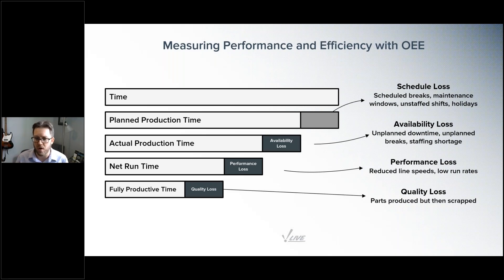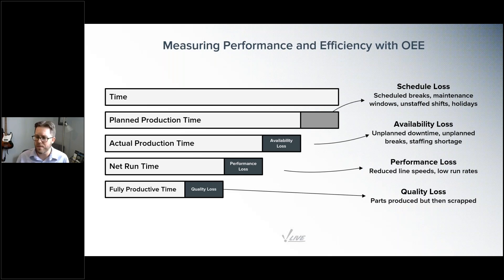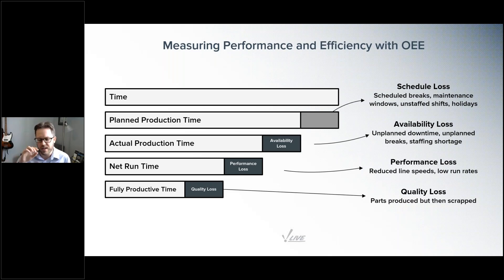Of your planned production time, there's time that you were planning on running but didn't run — that is an availability loss, such as unplanned downtime or a staffing shortage. Of the time that you were able to run, if you weren't running at the full capacity or speed that your line could be running, that's going to be a performance loss, or a throughput issue. And finally, if you are making parts but those parts aren't usable — they're failing quality checks and you can't sell them — that's going to be a quality loss.